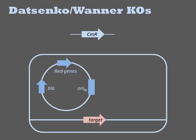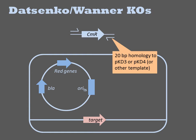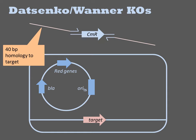The knockout cassette begins with a template plasmid. The plasmids PKD-3, PKD-4, and PKD-13 were originally designed for this experiment — they are essentially sources of the chloramphenicol resistance gene for PKD-3, or the kanamycin resistance gene for PKD-4 or PKD-13. There are specific 20 base pair regions of the plasmid called P1 and P2, which are the sites where oligos can prime to amplify the selectable marker in PCR. These PCR oligos are designed to contain these 20 base pair sequences on their 3' ends, and then 40 base pairs of homology to the genome target on their 5' ends.